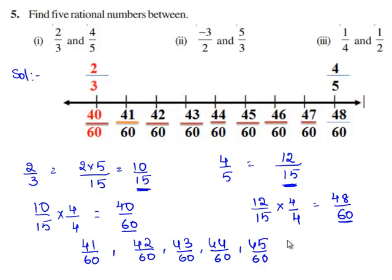Hence, using the same procedure, we can find any number of rational numbers between two rational numbers by converting them into their equivalent rational numbers.